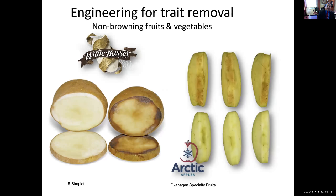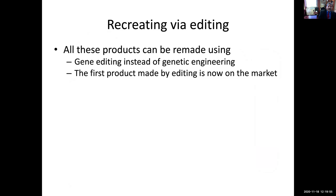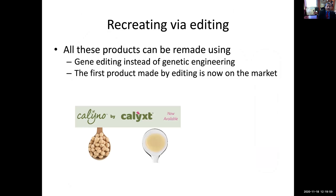Another RNA method — siRNA — has more recently been used in genetic engineering to remove unwanted traits. For instance, with potato and apple, both released and grown in the United States, the browning trait has been removed so that these fruits have a longer shelf life when cut. Just about a month ago, the FDA and USDA approved the release of the Pink Glow pineapple, which has a higher lycopene content and better attractiveness. Many of these traits can now be produced by gene editing, as traits developed through genetic engineering can be produced through gene editing.